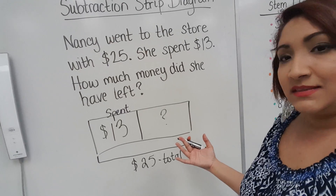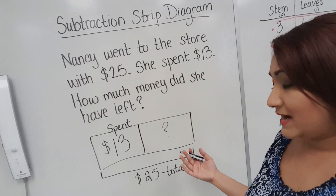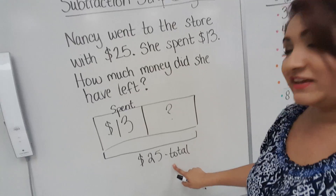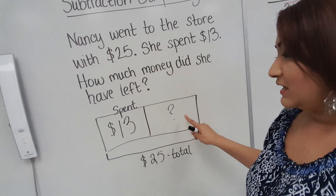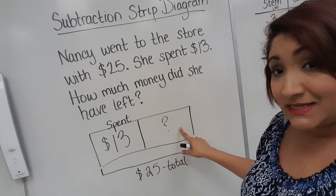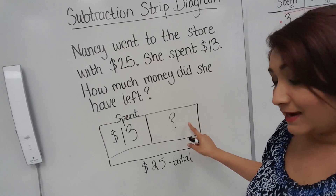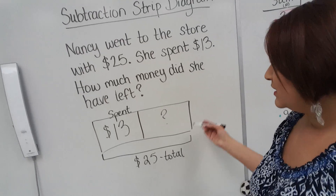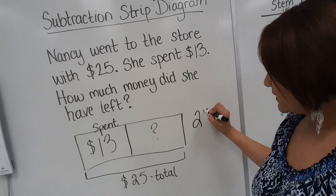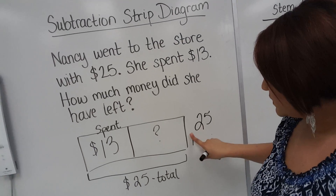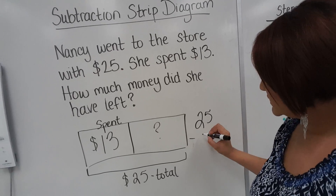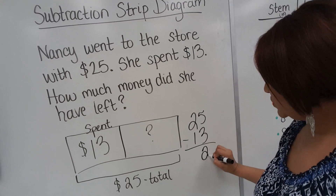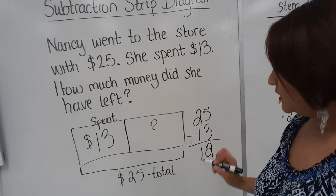I told the kids to think of it like an addition strip diagram — this number plus this number will give me $25. So they know that if there's one box that's empty inside of the strip diagram and it gives you your total, they know that they have to subtract. So they come to the side and they're going to subtract 25 minus 13. 5 minus 3 is 2, and 2 minus 1 is 1.